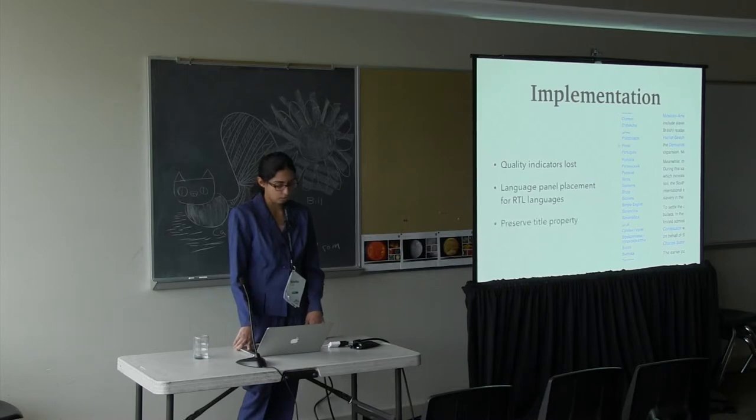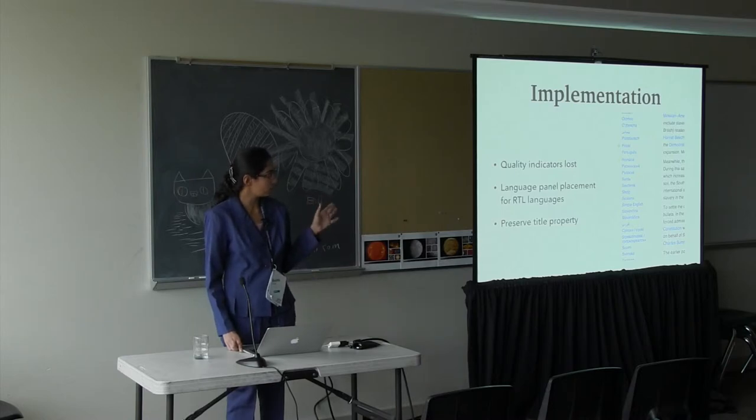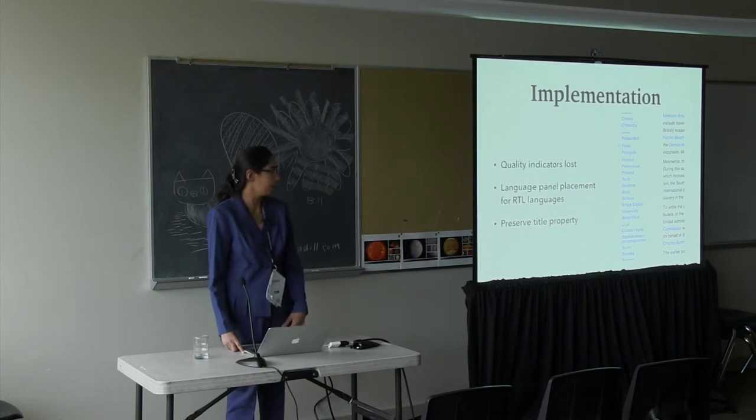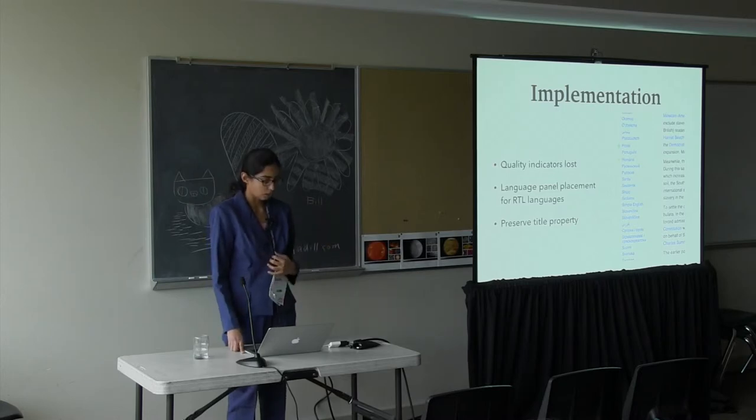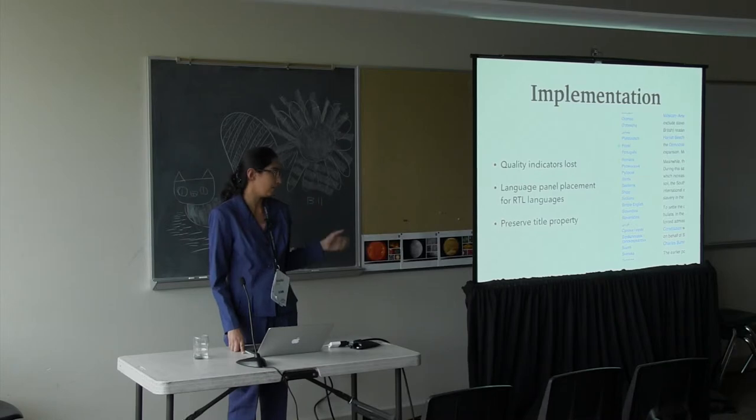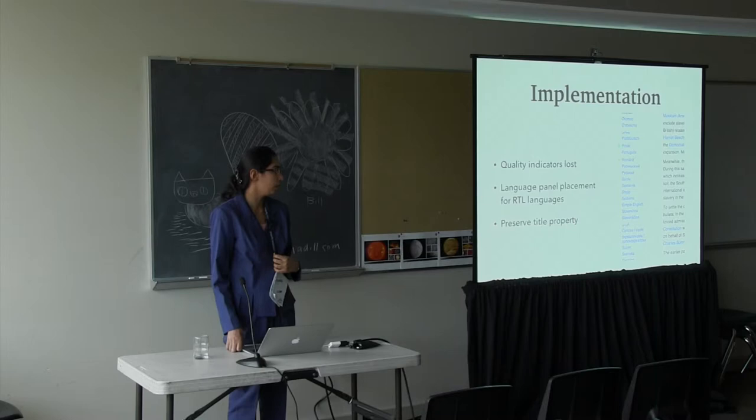Lastly, we come to the preserved title property. The languages that appear here appear in the native language font. Preserving the title was an important requirement. If you hover on the language, then the language name appears there in English. This was the preserved title property. This was lost when we were redoing this. We have this in the shorter list now, but not in the collapsed languages list. We cannot preserve the title property as of now. We're working on that because that needs change in the ULS source code, which was outside the scope of this project.